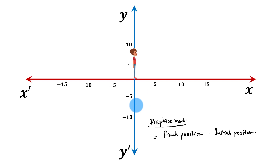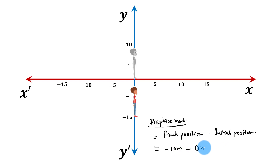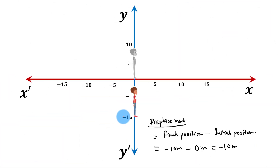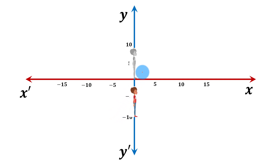If he moves downwards by 10 meters, his final position is negative 10 meters and initial position is 0 meters. In this case also, we get a negative displacement of magnitude 10 meters. So the summary of this lecture is: when we move in the negative direction of the x-axis or negative direction of the y-axis, we get negative displacement; when we move in the positive direction of the x-axis or positive direction of the y-axis, we get positive displacement.